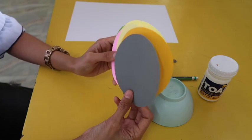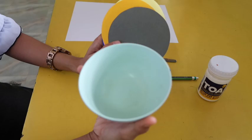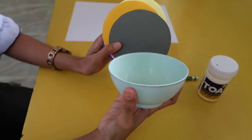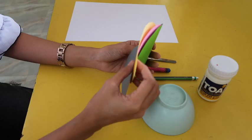So, as you can see, I already have here circles. So, in order to do this, you just get a small bowl and you are going to make a pattern. So, I have here six different colors.